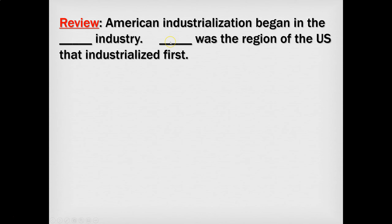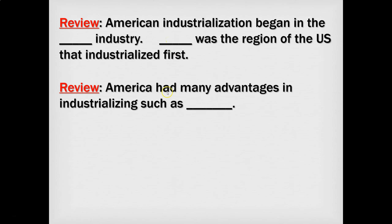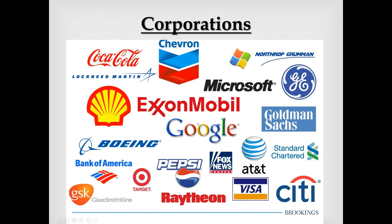You can see meat packers here working in a meat packing facility in Chicago around 1905. To review: American industrialization began in the textile industry, New England was the region that industrialized first, and America had many advantages such as plentiful resources, a growing population, and successful inventors and entrepreneurs.